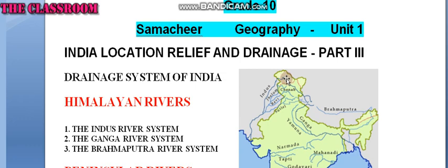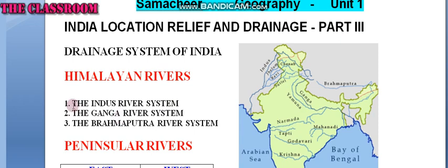Good morning children. In this video we are going to see about the Indian drainage system, Part 3, Lesson 1, Grade 10 Geography — India: Location, Relief and Drainage. While talking about the Indian drainage system, it is divided into Himalayan rivers and peninsular rivers.